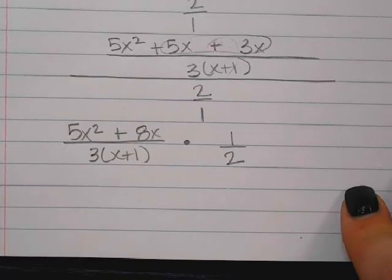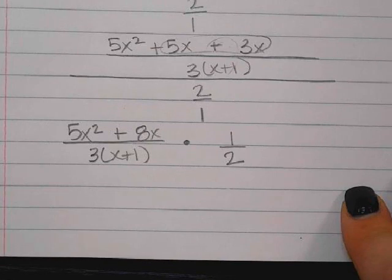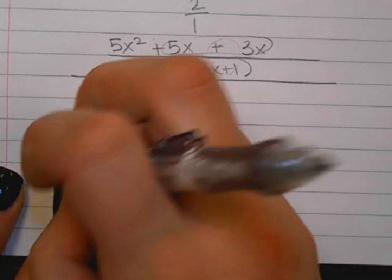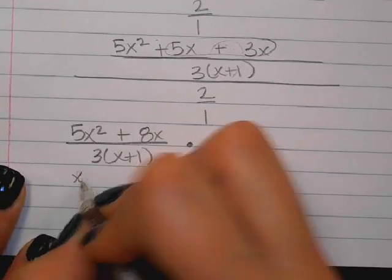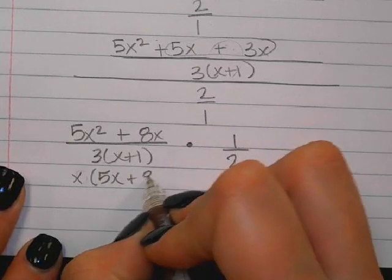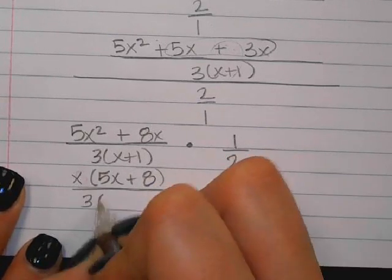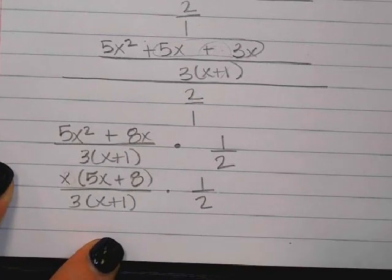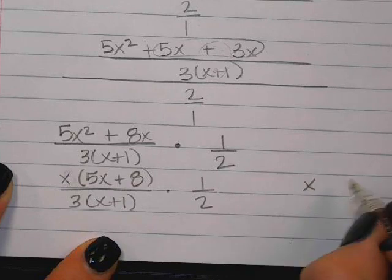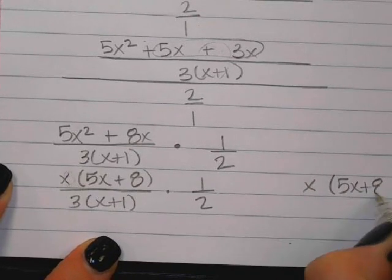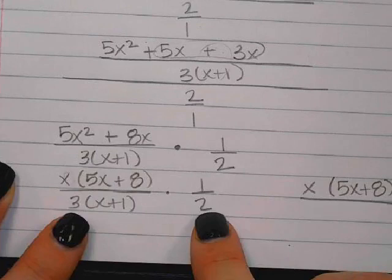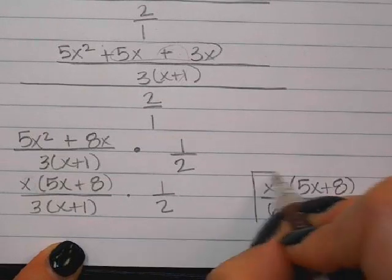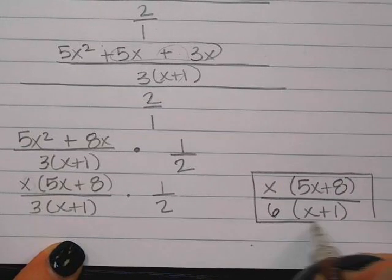So I've got 5x squared plus 8x on the numerator. I'll see if I can factor anything and if anything will cancel. There's a GCF of x on the top. Nothing is going to cancel, so I write my leftovers: x times (5x plus 8) on the top. On the bottom I have 3 and 2, giving me 6, and (x plus 1). And I'm all done.